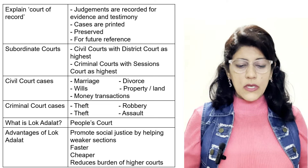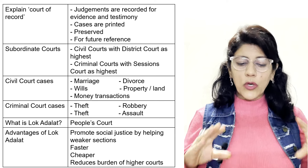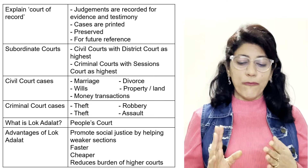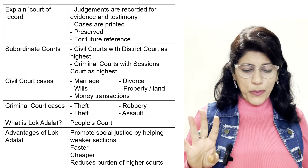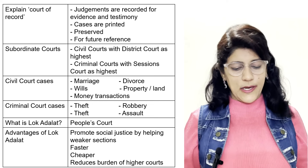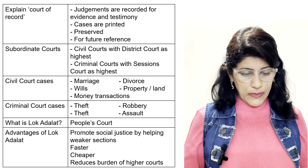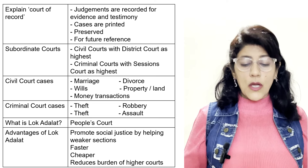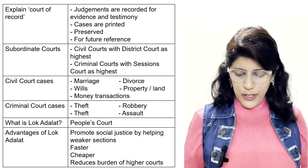Subordinate courts: civil courts with district court as highest, and criminal courts with sessions court as highest. Civil court cases include marriage, divorce, wills, property, land transactions, and money transactions. Criminal court cases include theft, robbery, assault, and dacoity. What is Lok Adalat? It is a people's court. Advantages of Lok Adalat: promotes social justice by helping weaker sections, faster, cheaper, and reduces the burden on high courts.